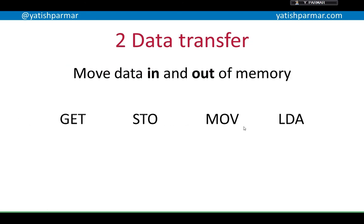The second type of instruction is moving data in and out of memory — where you get, store, move, load, etc. So we are getting data from memory or we are taking it out of the CPU and putting it back into main memory. These mnemonics make it easy. If you're writing assembler, you can use these to write a program as opposed to trying to write actual machine code.